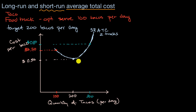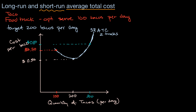In either of these situations, let's say the pessimistic scenario actually happens and there's only demand for 100 tacos per day. The rational thing would be to sell one of those trucks — we're only at 50% utilization — to lower our average total cost. In the long run, you can adjust your fixed costs. So with one truck, at 100 tacos per day, our costs are 60 cents per taco.